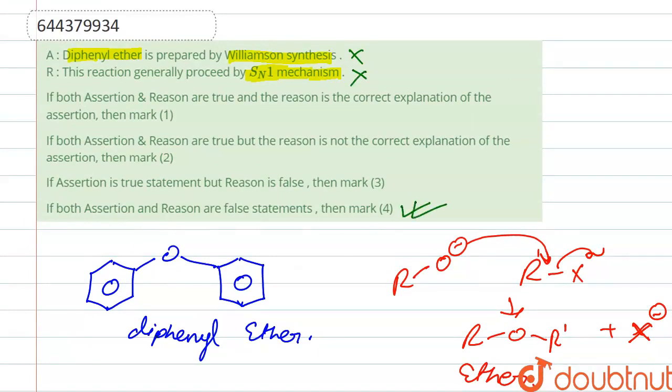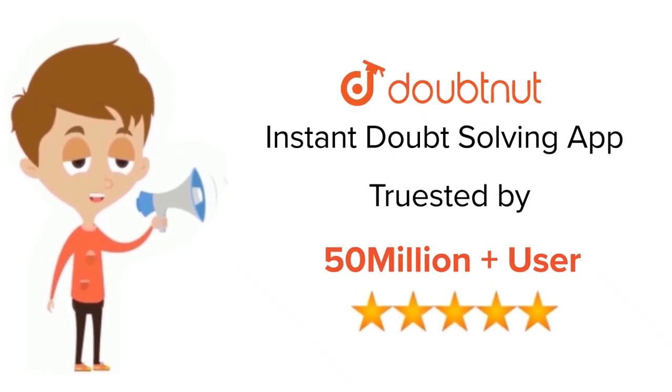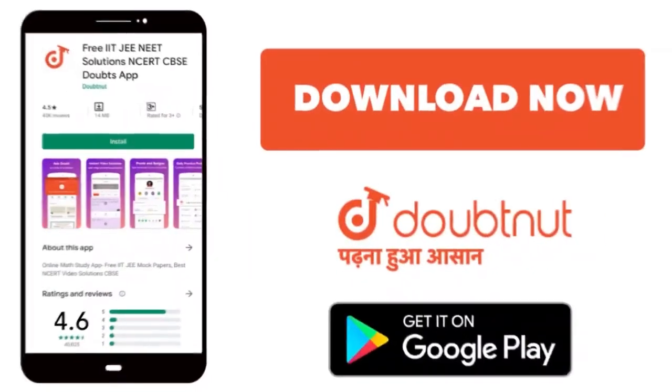So our correct option is option D. Thank you. For class 6 to 12, IIT-JEE and NEET level, trusted by more than 5 crore students. Download Doubtnet app today.